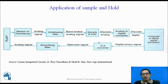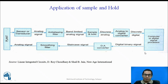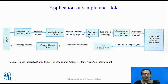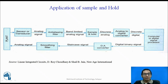One popular application of the sample and hold is in analog to digital conversion. In a typical setup, an analog input from a plant is converted to digital by an analog to digital converter, processed by a digital computer, and then passed through a D-to-A converter. The analog to digital converter converts an unknown analog voltage into a proportional digital output, but requires some time for conversion. During that time, the input analog voltage must not change. A sample and hold circuit placed before the ADC holds the voltage constant during the conversion period.